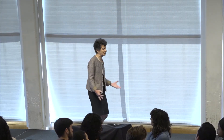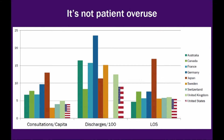Another theory people sometimes put forward is that it's because Americans use so much health care. That turns out not to be true, partly because so many people were, at least for a long time, uninsured. And because cost sharing is so high, we actually use fewer consultations per capita than most other countries. The winner here is Japan — people go to the doctor 12 times a year.